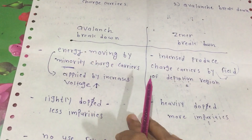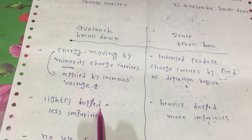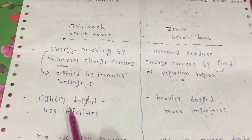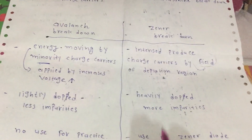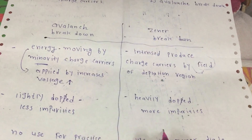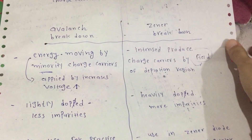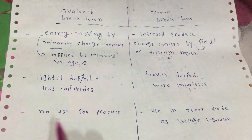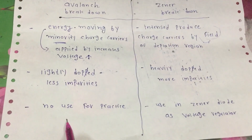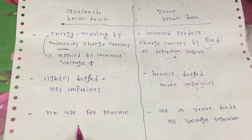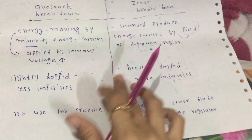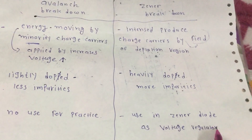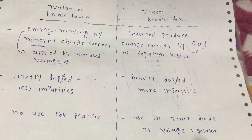In avalanche breakdown, the diode is lightly doped with fewer impurities. In zener breakdown, the diode is heavily doped with more impurities in P-type and N-type materials. In practice, the avalanche diode has no use in electronics, but the zener diode is used as a voltage regulator.